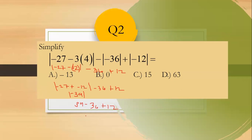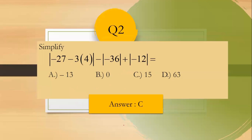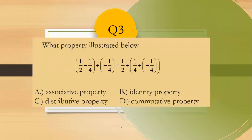Continuing, we have 39 minus 36 plus 12. From left to right: 39 minus 36 is 3, then 3 plus 12 equals 15. The answer is letter C, 15.